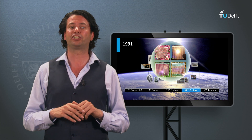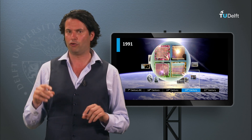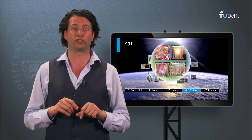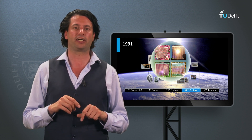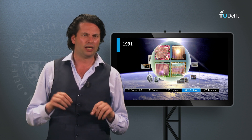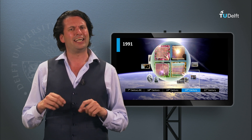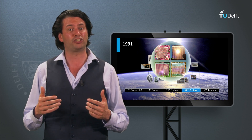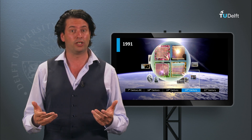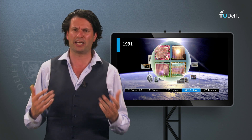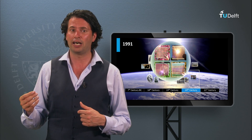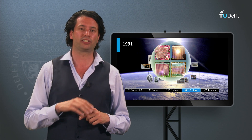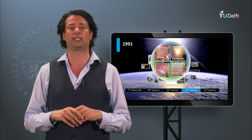In 1991, the first high-efficiency dye-sensitized solar cell was published by the École Polytechnique Fédérale de Lausanne in Switzerland by Michael Grätzel and co-workers. The dye-sensitized solar cell is a kind of photoelectrochemical system in which a semiconductor material based on molecular sensitizers is placed between a photoanode and an electrolyte. We will discuss this technology in week 6.